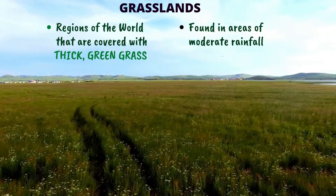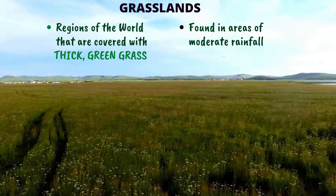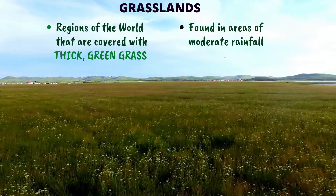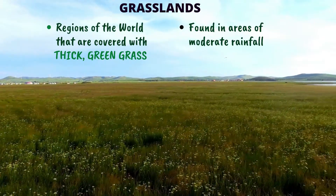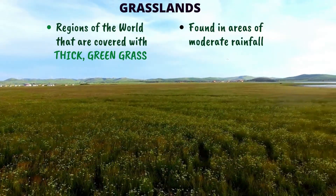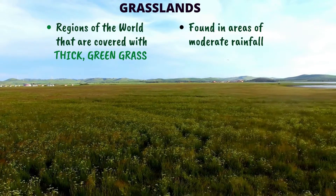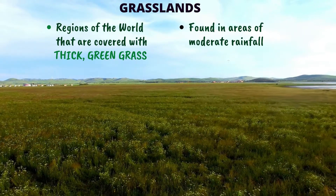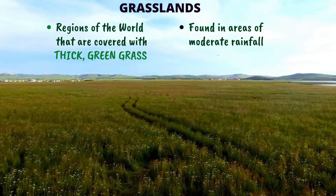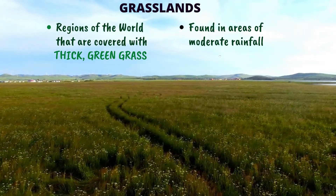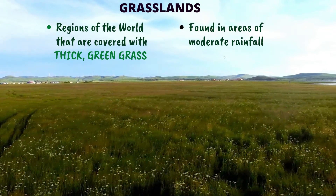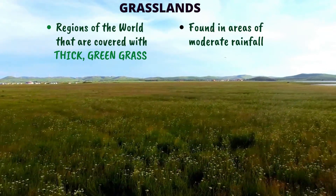What is a grassland? Regions of the world that are covered with thick green grass. These grasslands are found in areas of moderate rainfall.